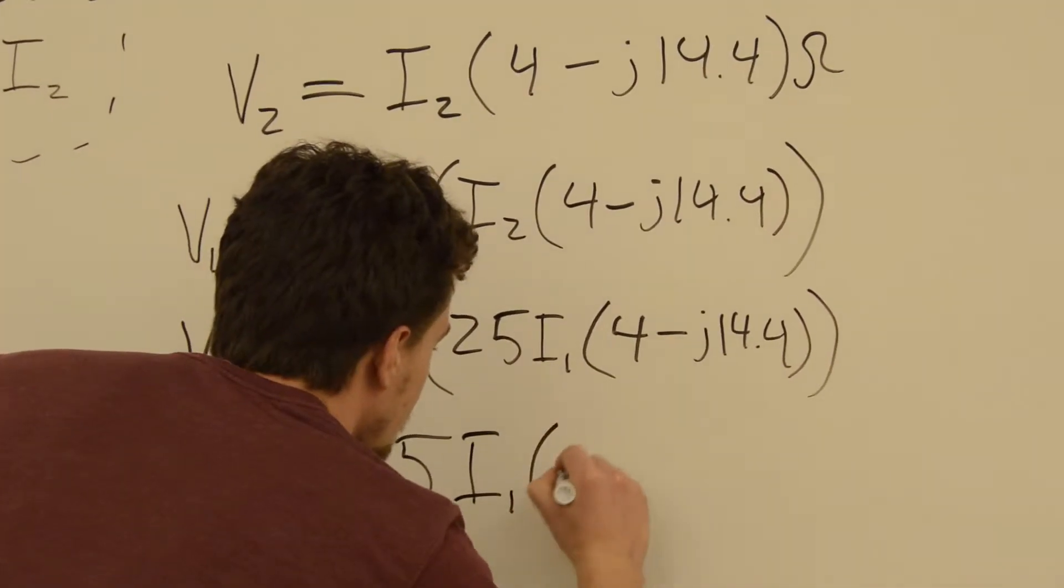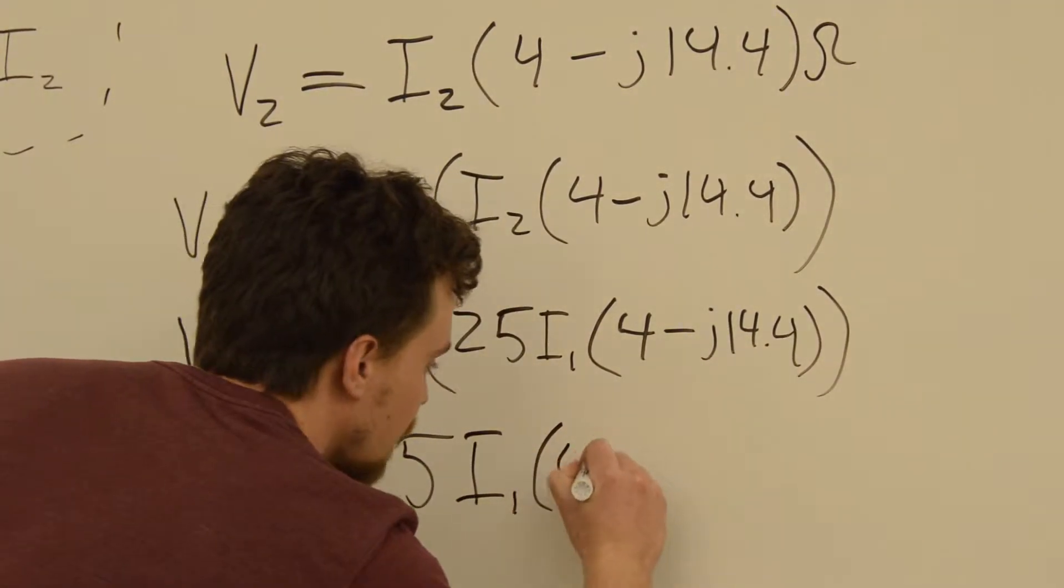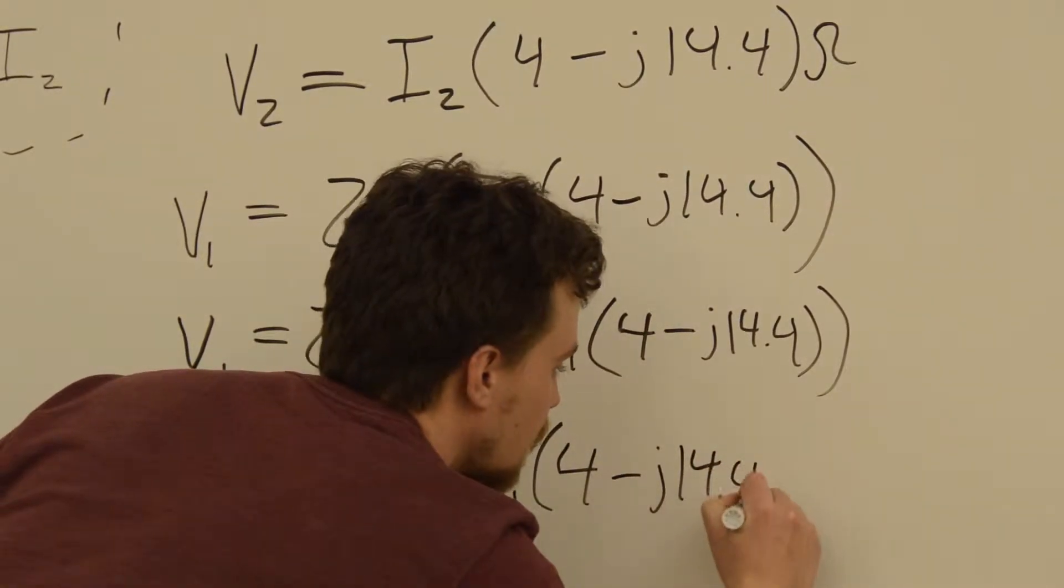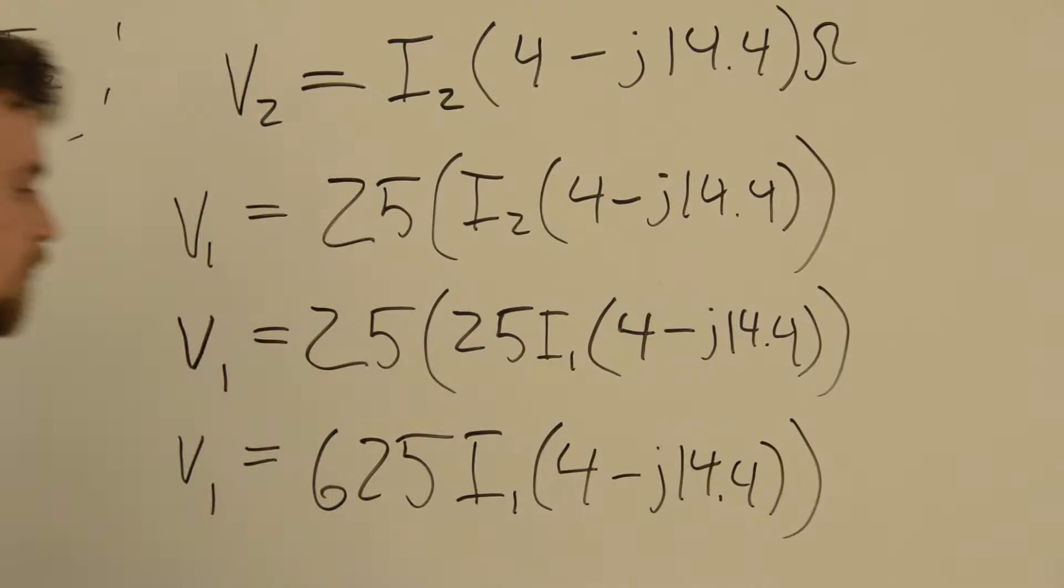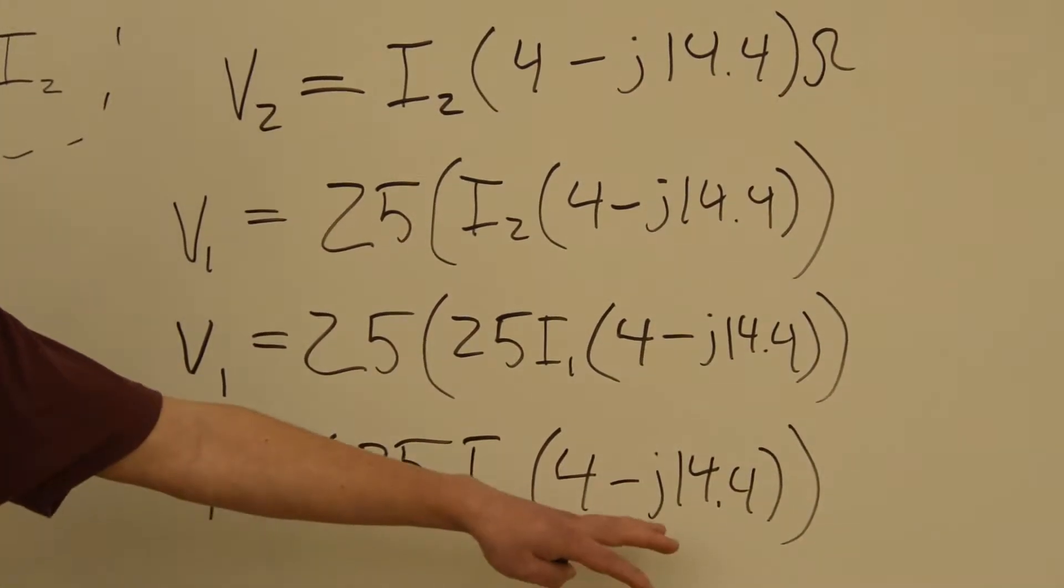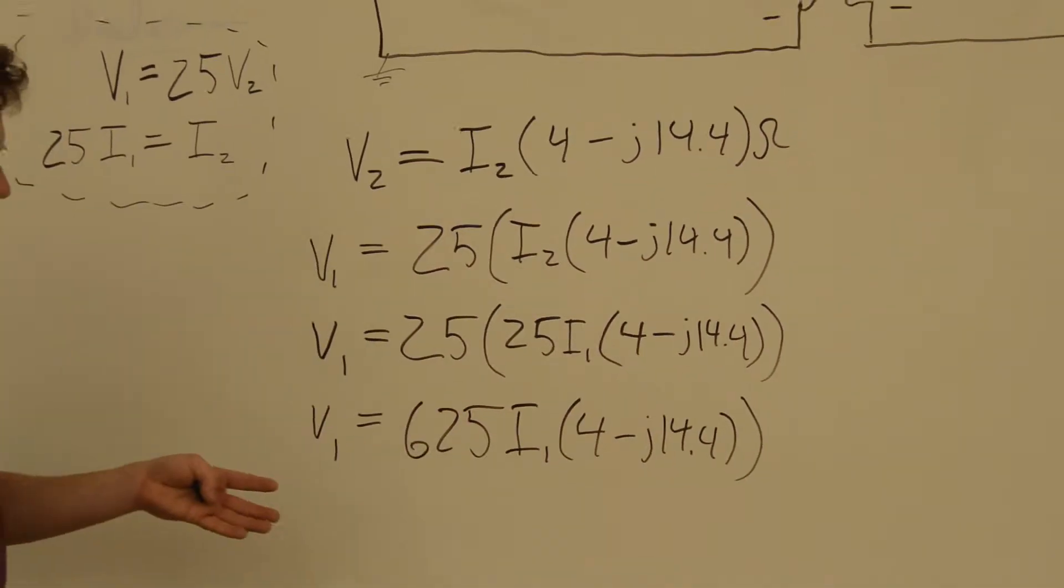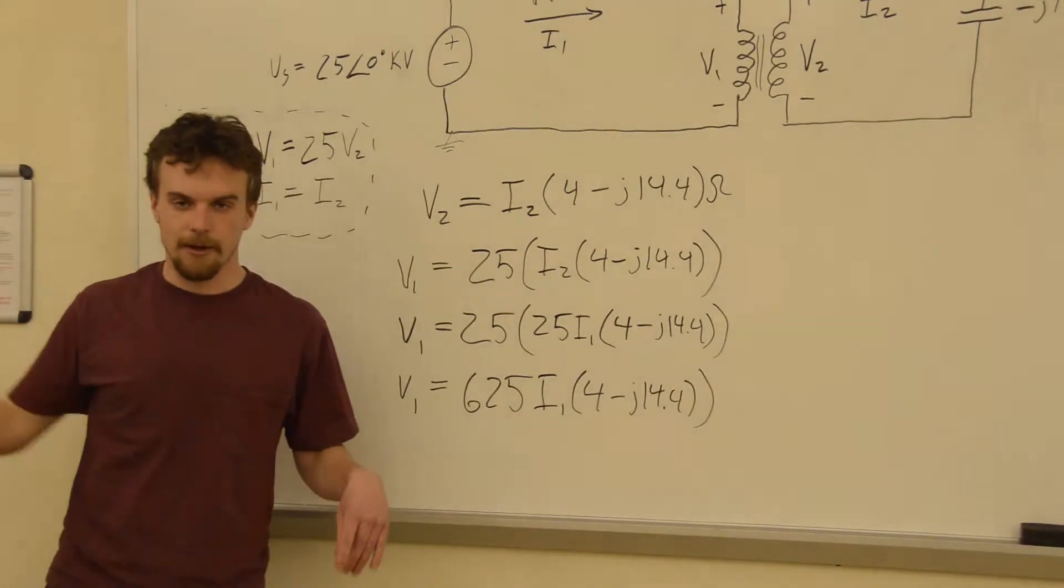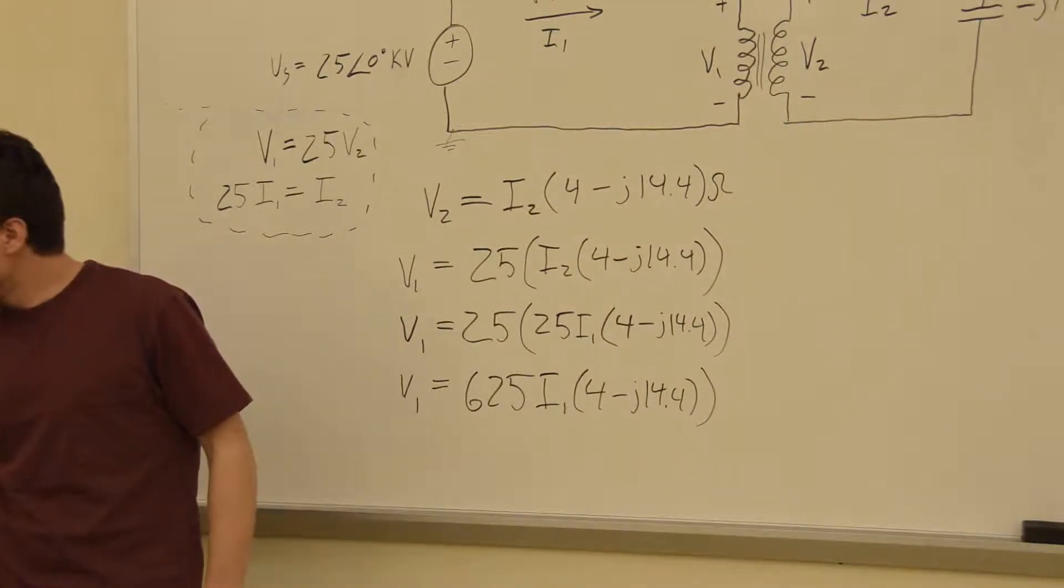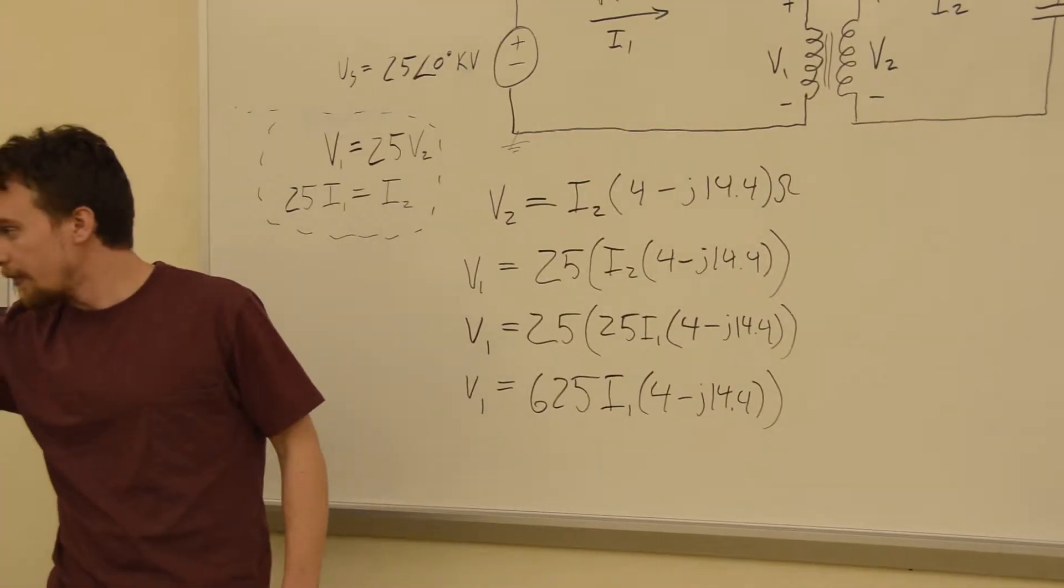V1 is equal to 625 I1 times this number again, 4 minus J 14.4. Alright, so we're going to have to start doing complex math with this number. So I'm going to be pausing and looking on the screen a little bit. So this reduces down to...